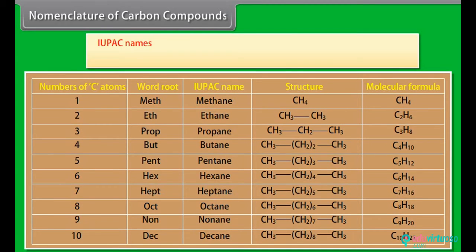IUPAC names. Carbon compounds now need to be named in a more systematic way. A committee called the International Union for Pure and Applied Chemistry, IUPAC, put forward a system of giving scientific names to carbon-based compounds. These names are followed all over the world and are called IUPAC names.